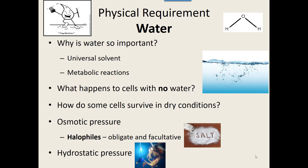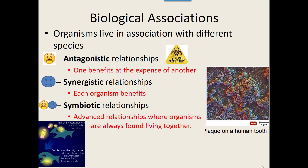The intro video left off right at this slide, still talking about what microbes need or require to grow — things that make them happy, things that help them grow. We're going to continue that, but also talk about how sometimes they actually need each other. There are three different types of biological associations we're going to cover.